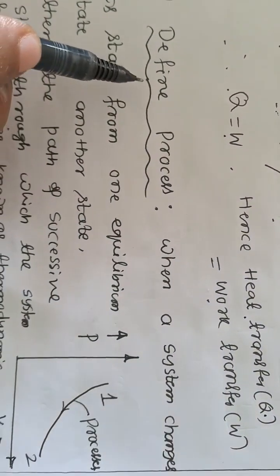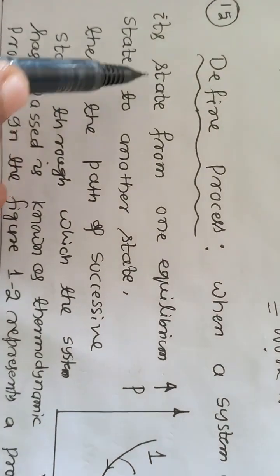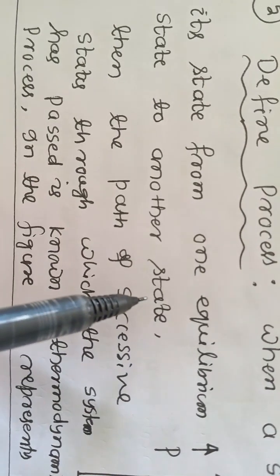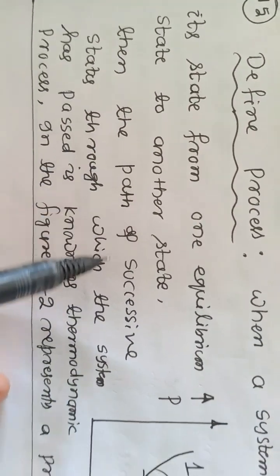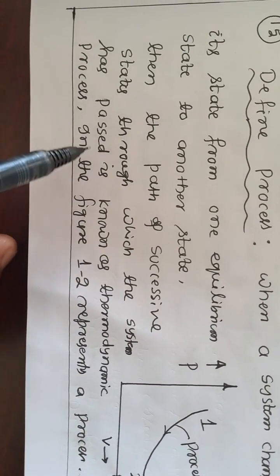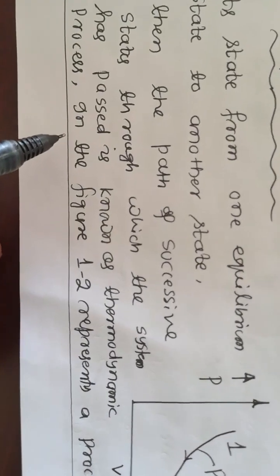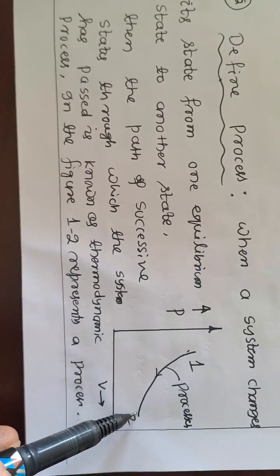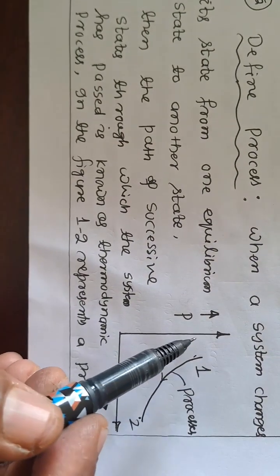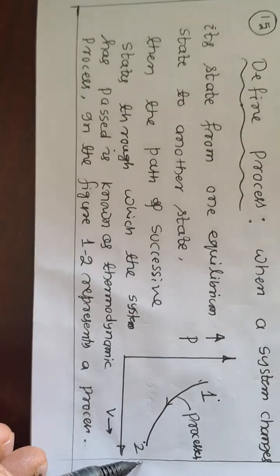Define thermodynamic process. When a system changes its state from one equilibrium state to another, the path of successive states through which the system has passed is known as a thermodynamic process. In the figure, 1-2 represents a process, where 1 is the initial equilibrium state and 2 is the final equilibrium state.